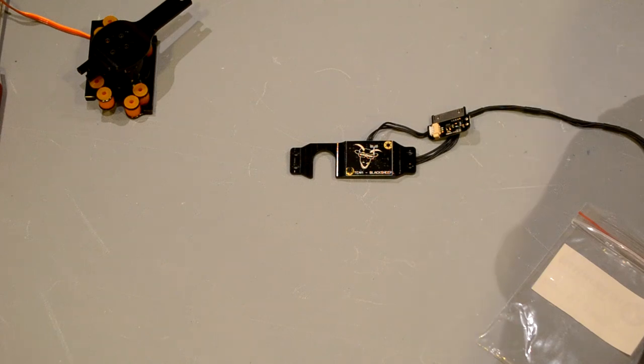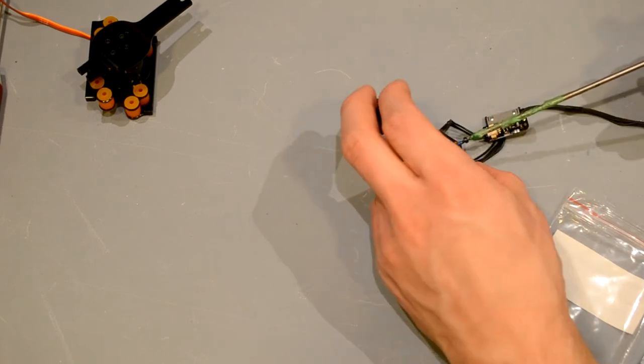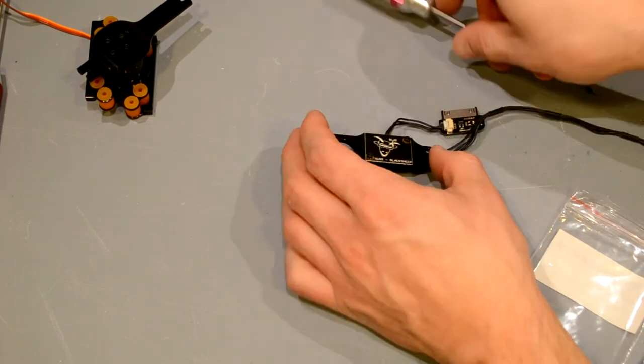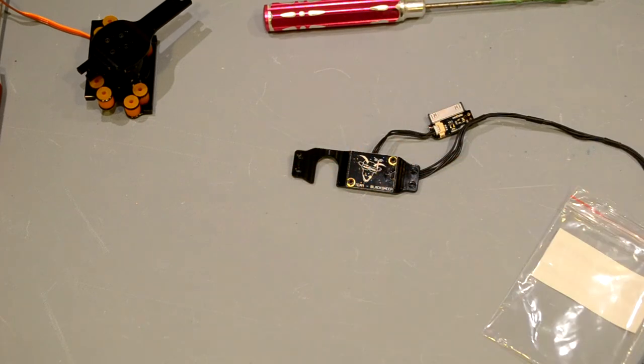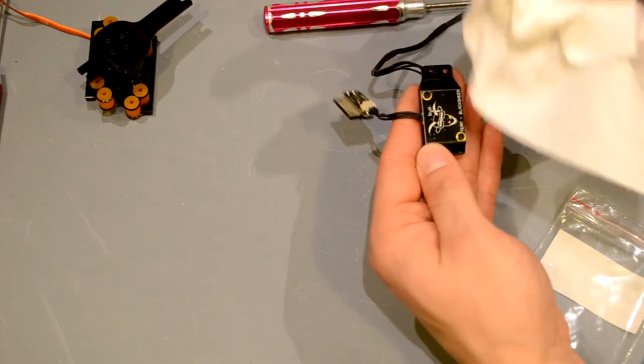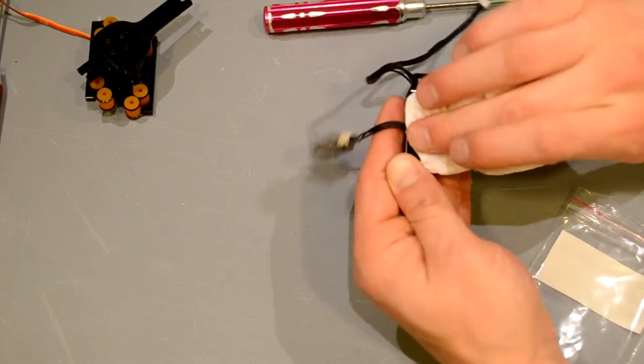And then go ahead if you get extra thread locker on your PCB. Go ahead and wipe that off. I don't know if thread locker is gonna be able to attack the material of the PCB. But you just wanna be safe. There's no reason to leave that gunk there.